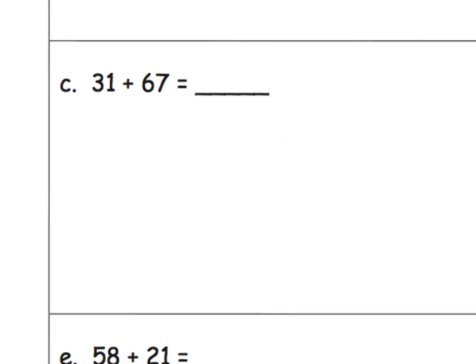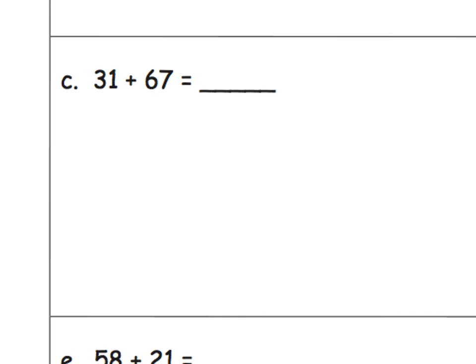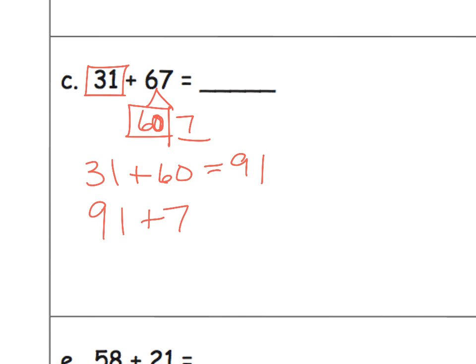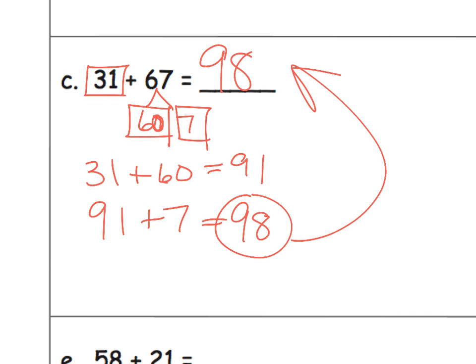If we zoom in on problem C, we could say, let's leave the 31 the same and we can think of 67 as 60 and 7. Now we can think of 31 plus 60, that gives us 91. Then we're going to take the 91, so we just added the 31 and the 60, we're going to add in that lonely leftover 7, and that gives us 98. That is our answer right there. This is one example of what we might be expecting.